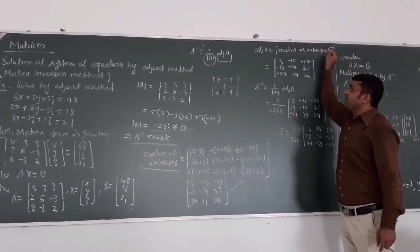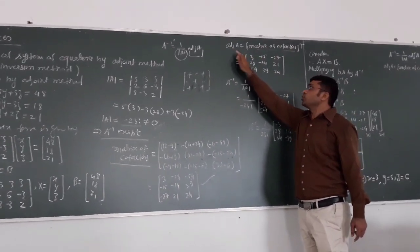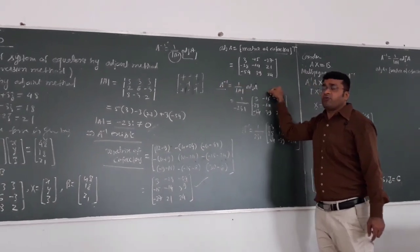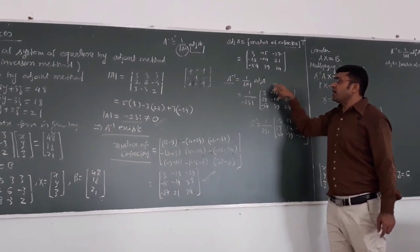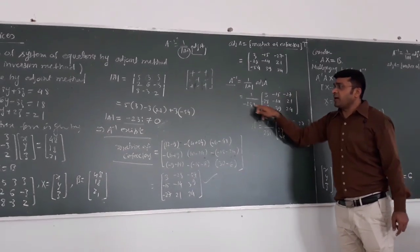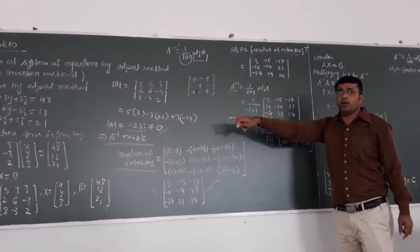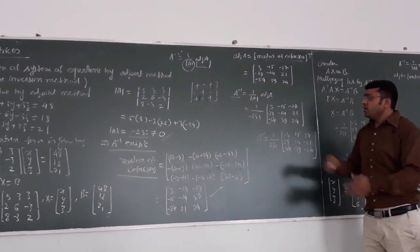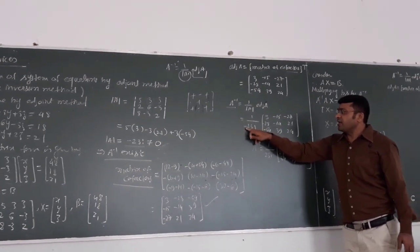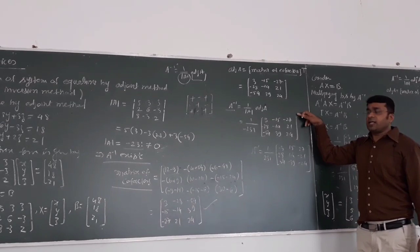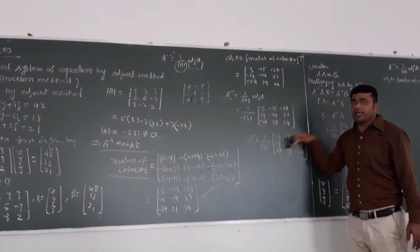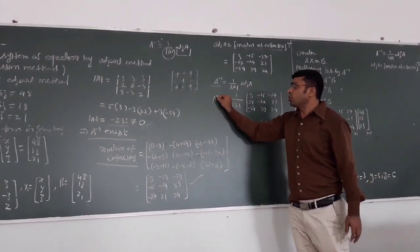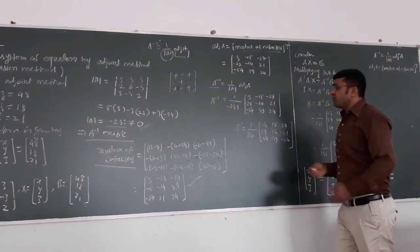Taking the transpose of the cofactor matrix gives us the adjoint of A. Now we compute A inverse using the formula: A inverse = (1 / determinant of A) × adjoint of A. The determinant is −231 (already calculated). For convenience, we multiply the −1 factor into each element of the adjoint matrix. This gives us A inverse.